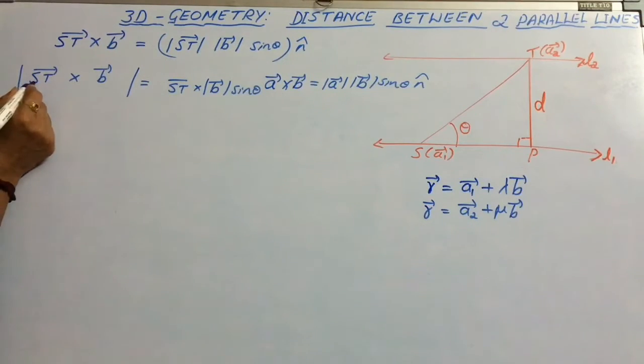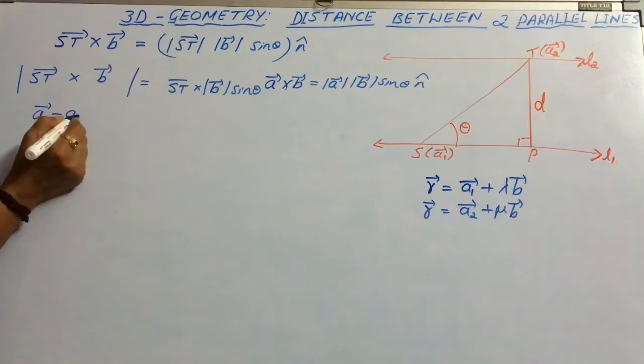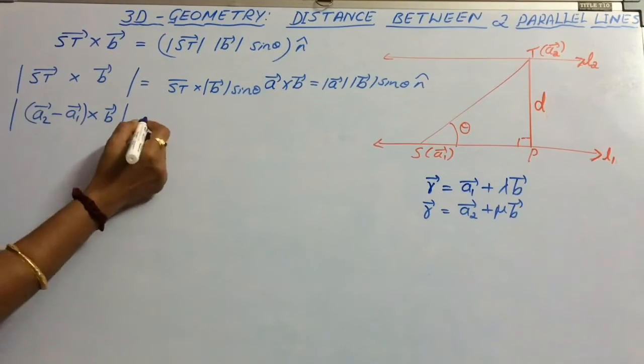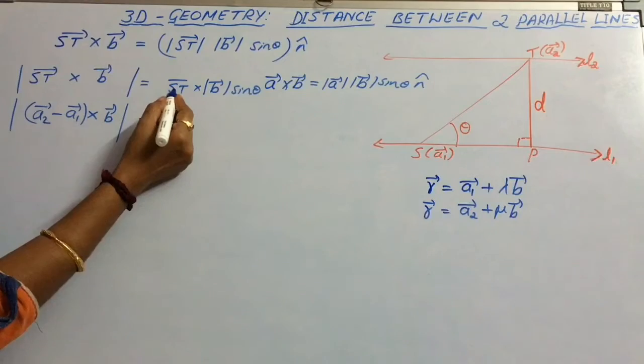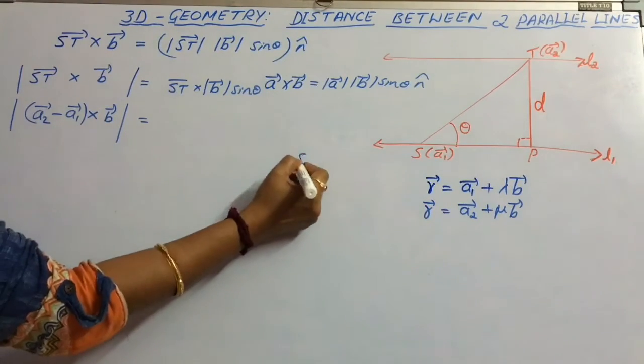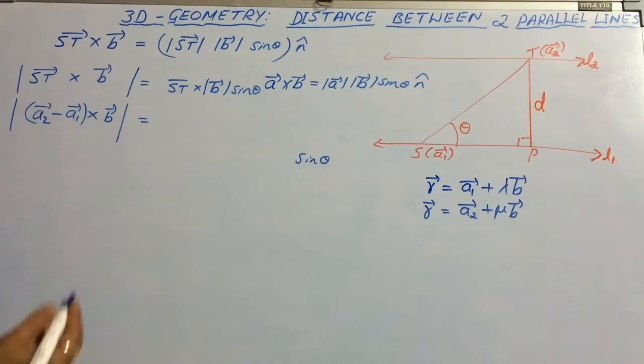Now this St can also be written as (a2 - a1) cross product with vector b, and magnitude of this is equal to St |b| sin theta. Let us consider the expression for sin theta.